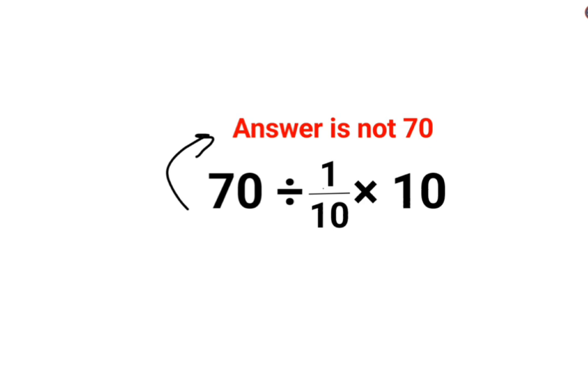Please understand that in sums like these, a lot of people think that 1 upon 10 multiplied by 10 gets cancelled. So we have 70 divided by 1 and that is why they thought the answer is 70.